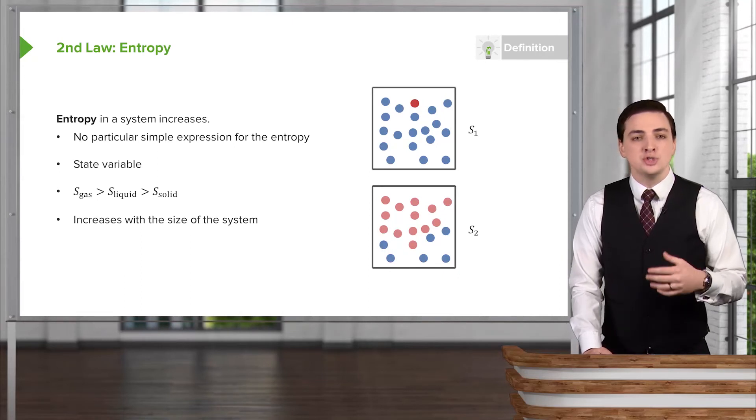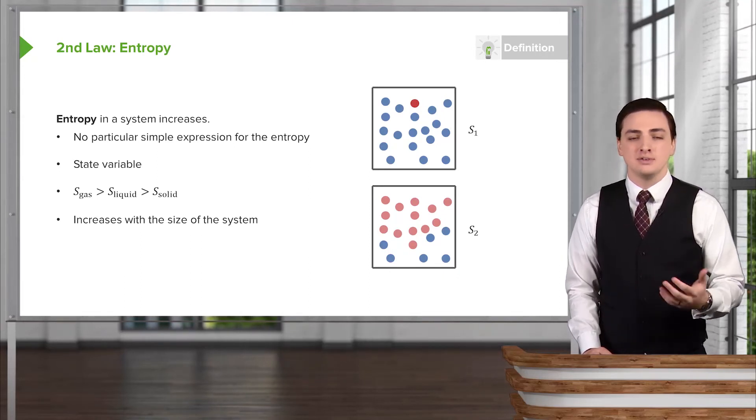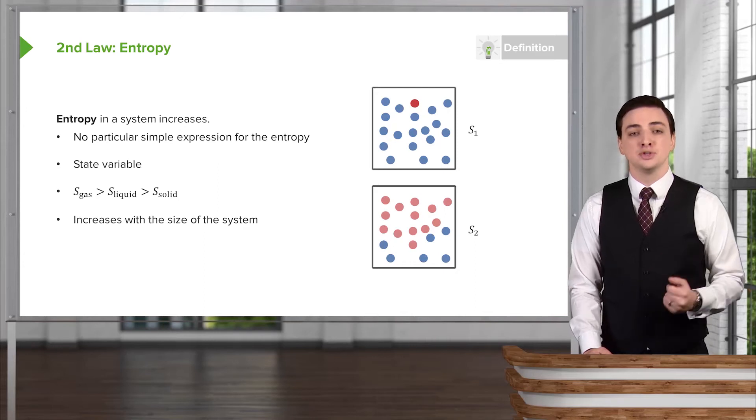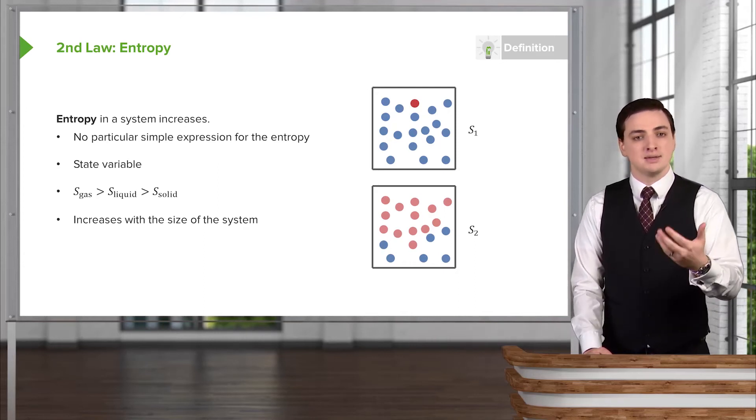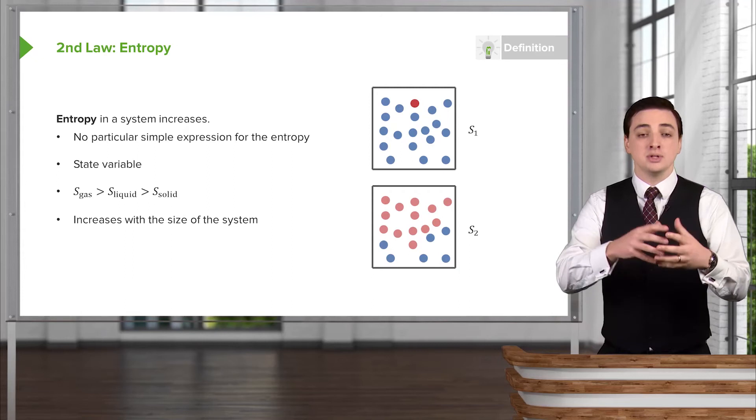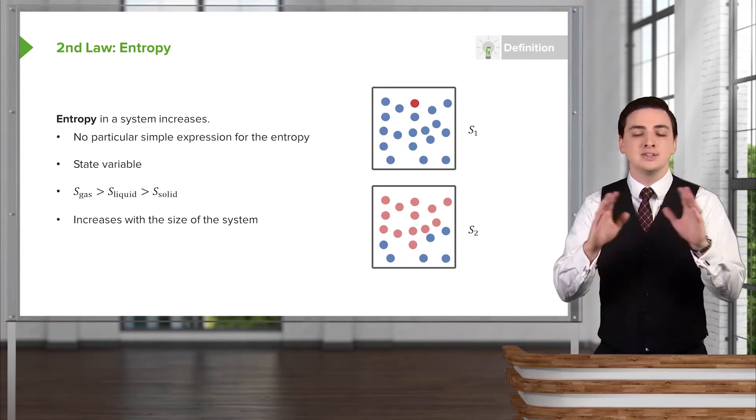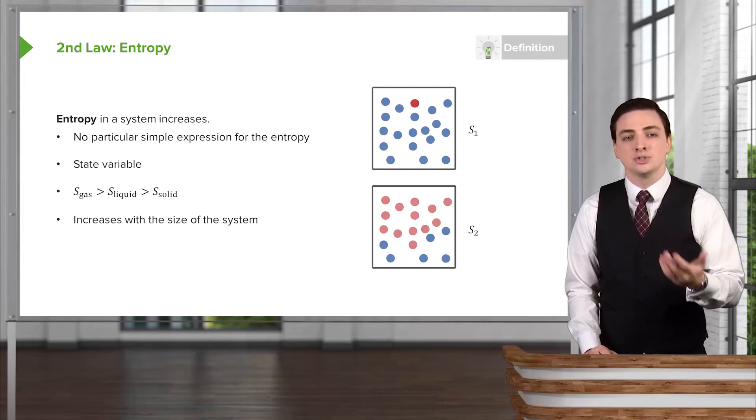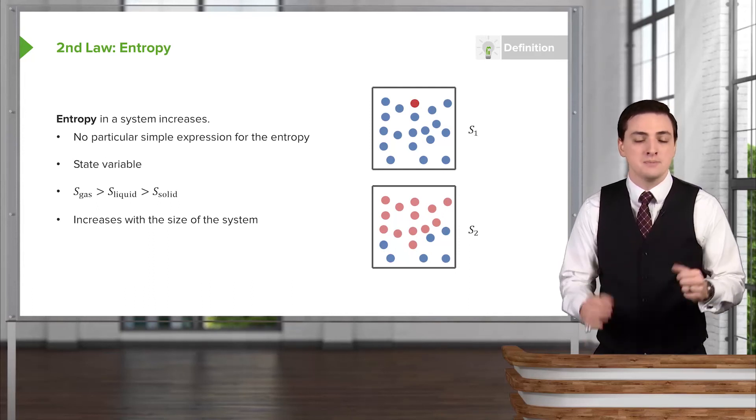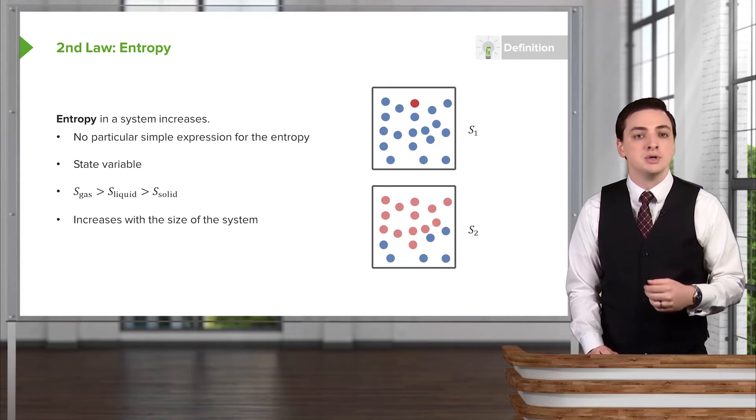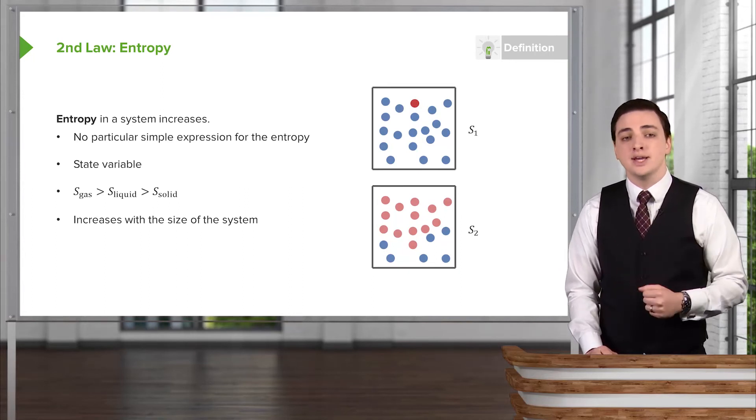This sounds almost too intuitive, so you might again ask, well, what system wouldn't follow this law? But again, temperature wouldn't. Imagine you have a system that is at 10 degrees. You double it so you now have two systems, both at 10 degrees. You wouldn't say the whole system is now at 20 degrees, because that's not how the temperature adds. Temperature is simply a property of the system intrinsically rather than extrinsically like the entropy is.